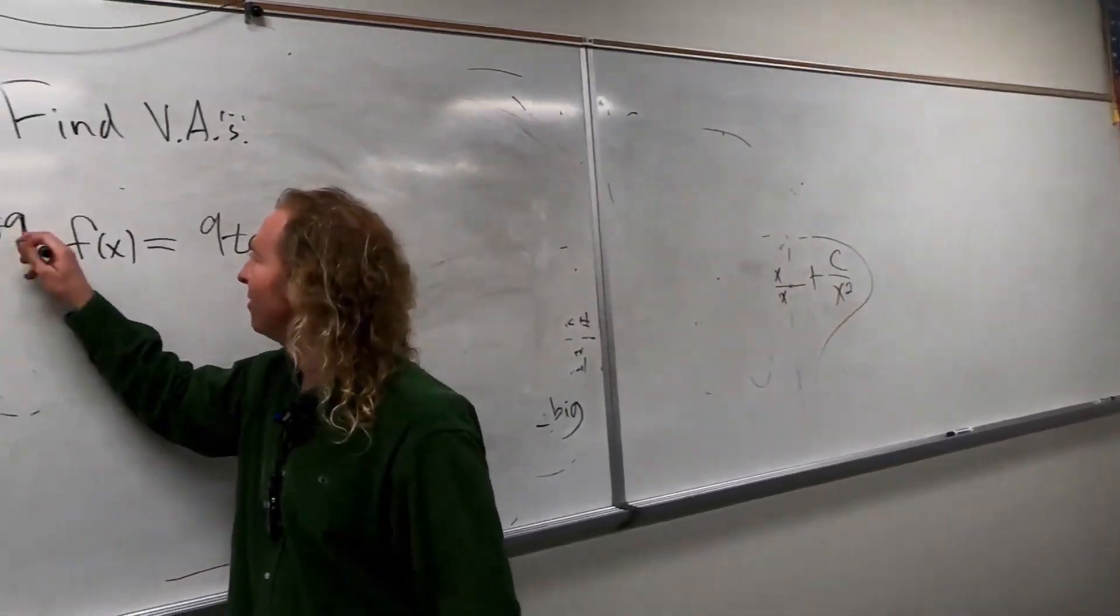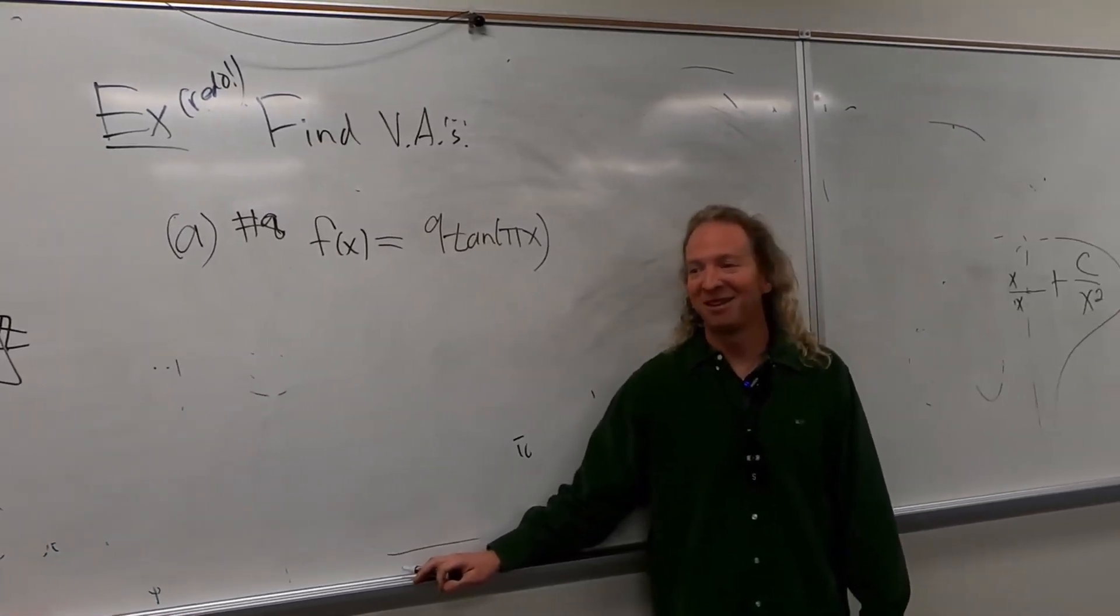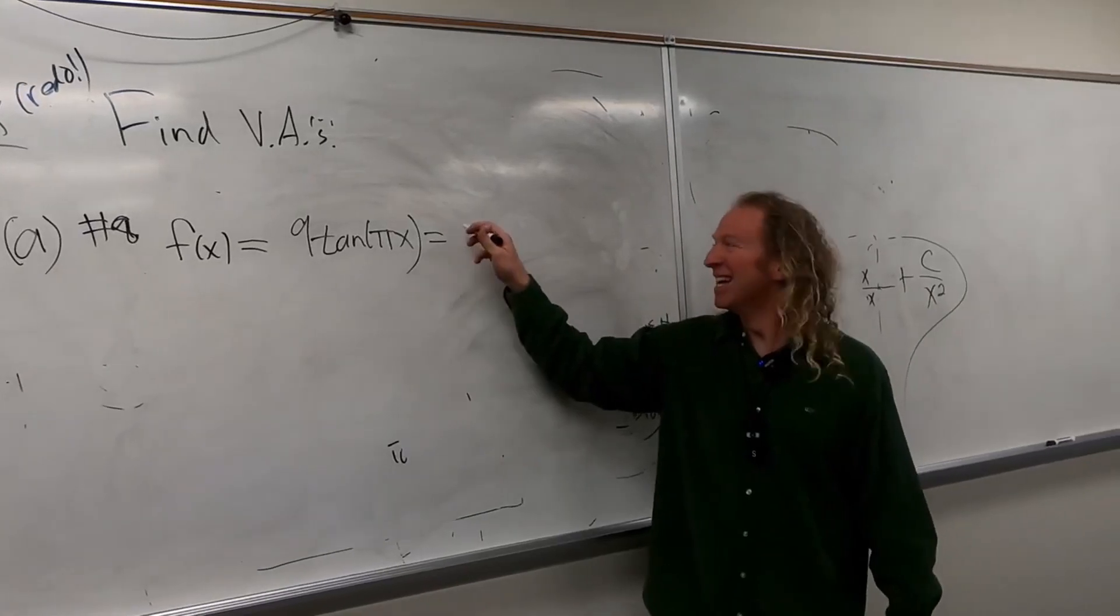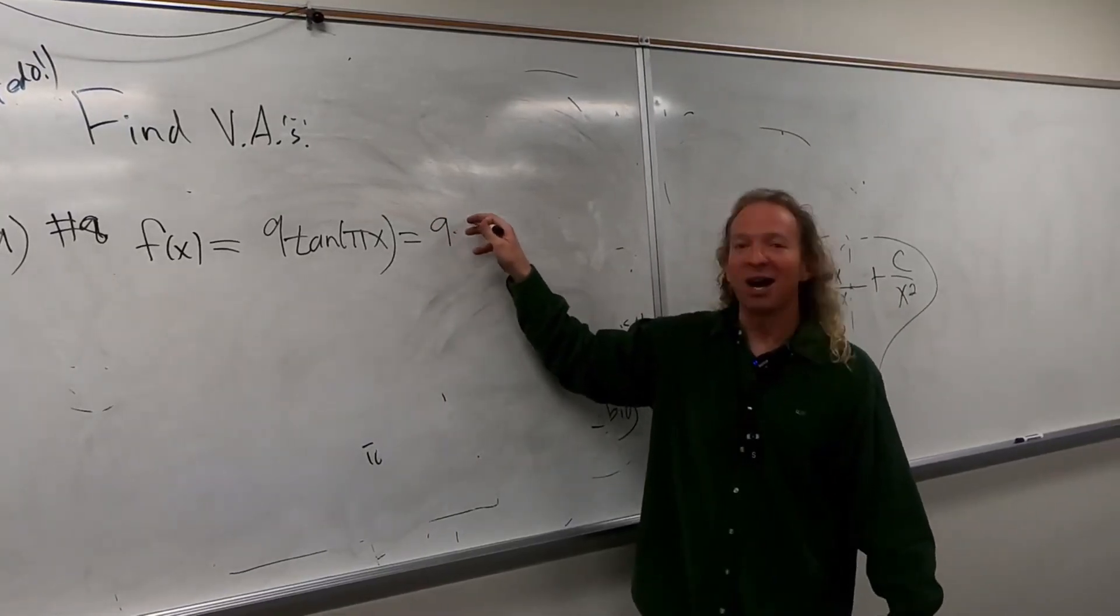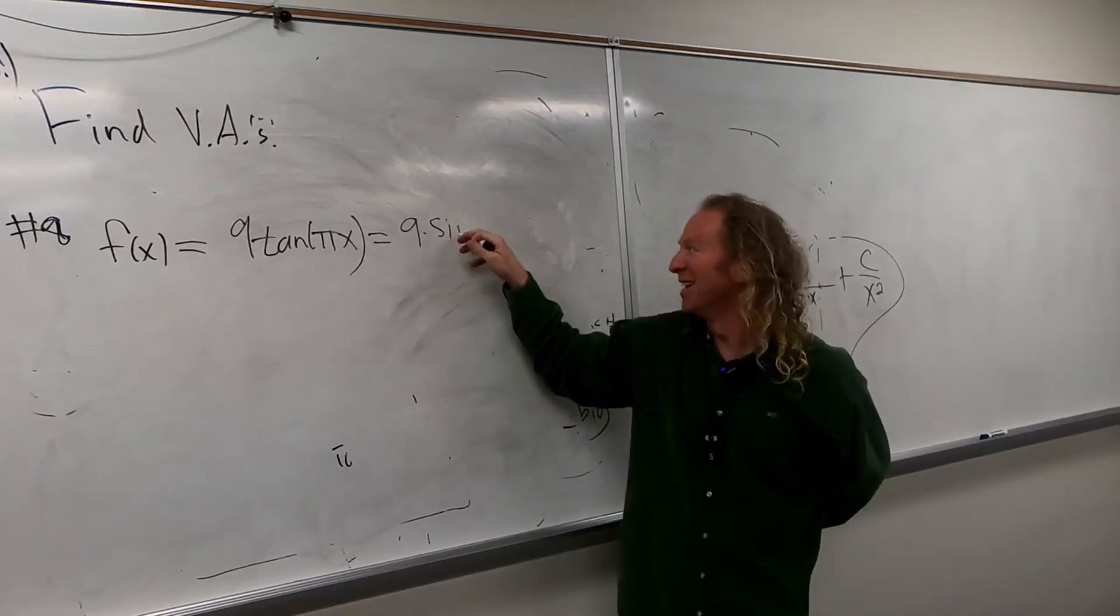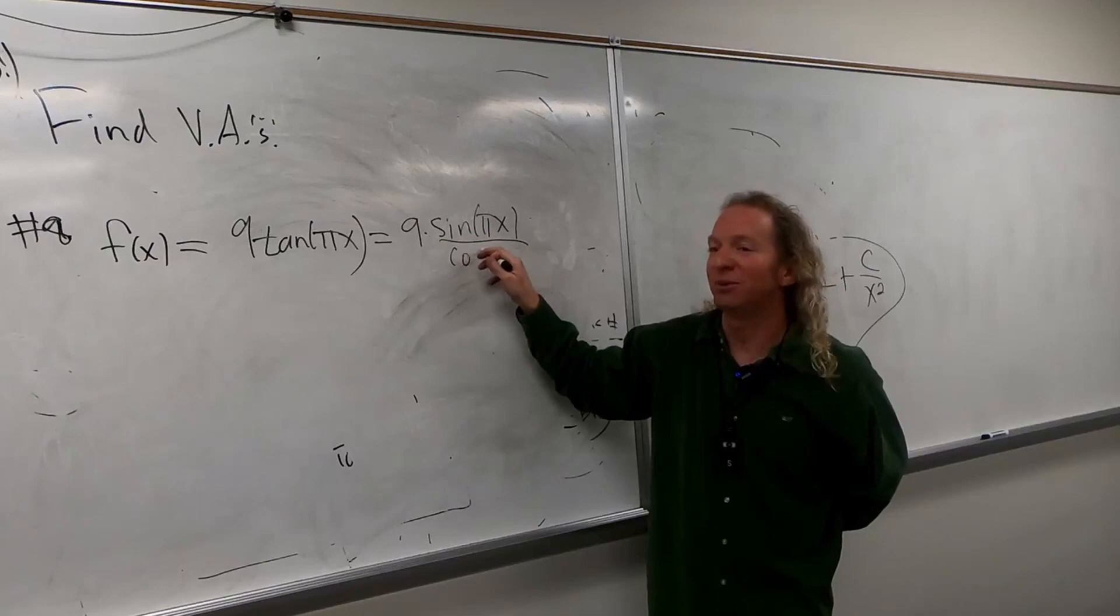Is that a point or is that a math error? That's your error. Okay, alright so this is going to be... So this is 9. So tangent is sine over cosine: sine of pi x over cosine.